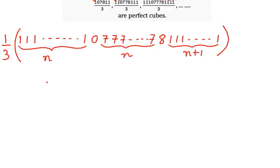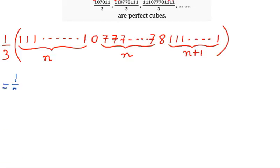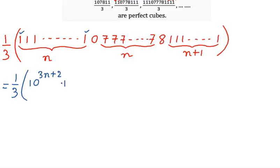Now let's write this number in decimal format. First, let's count the total digits: n digits of '1', then n digits of '7', then one '8', then n plus one digits of '1', giving a total of 3n plus 3 digits. We start writing the decimal expansion: 10 to the power 3n plus 2, plus 10 to the power 3n plus 1, plus 10 to the power 3n, and so on.